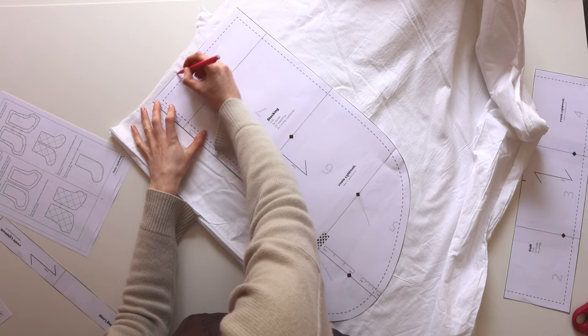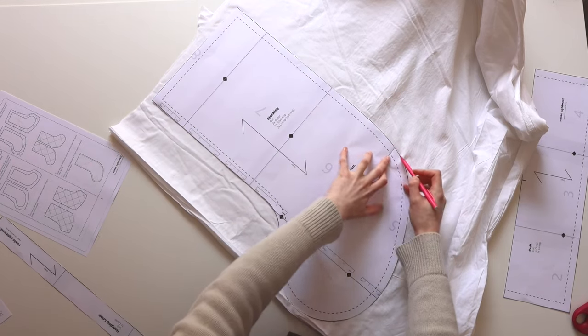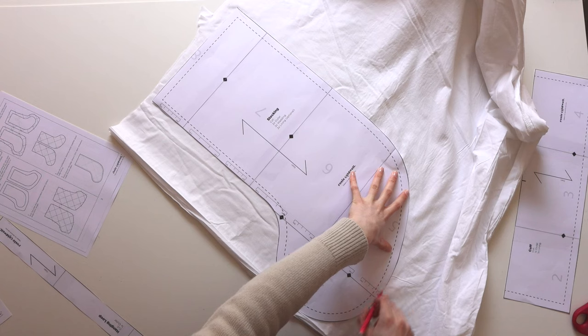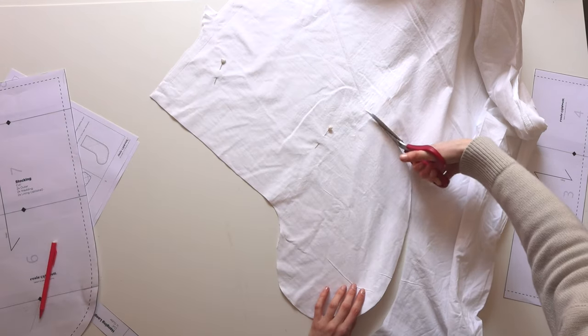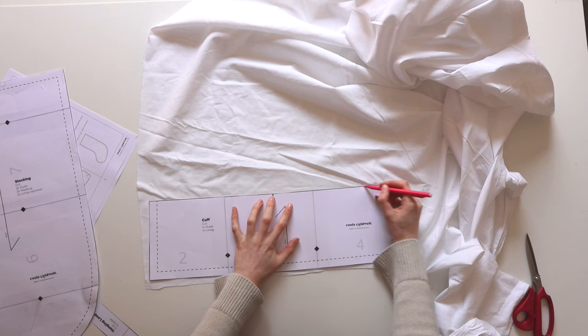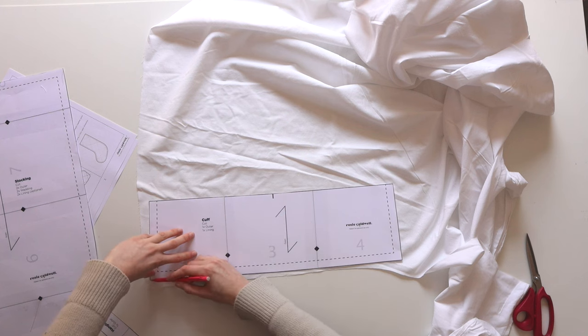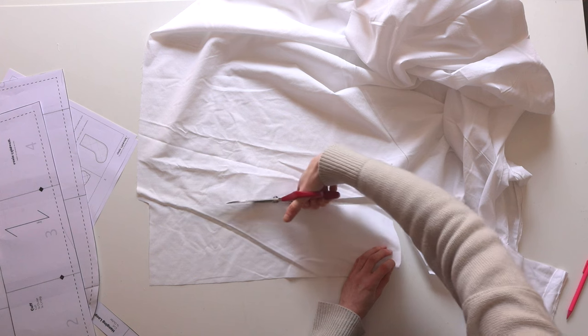Then go ahead and cut out your lining. You'll need two mirror image pieces for this as well. I just use a really plain cotton for the lining. It's something that's going to match the color of the cuff so that it doesn't look too stark of a difference on the top of the stocking. And whilst you have your lining fabric out, cut one piece of your cuff out in the lining.